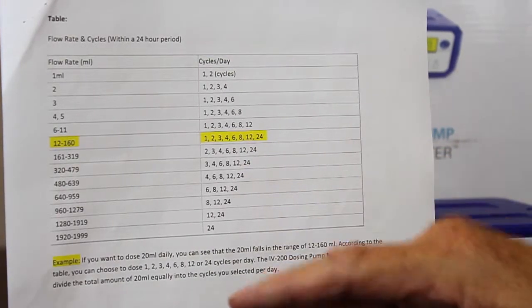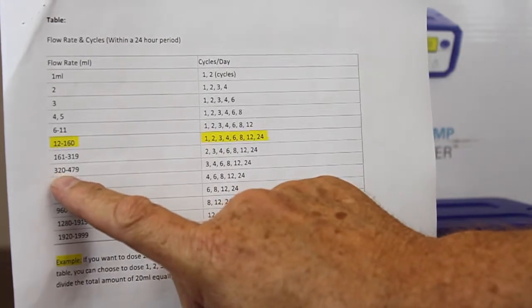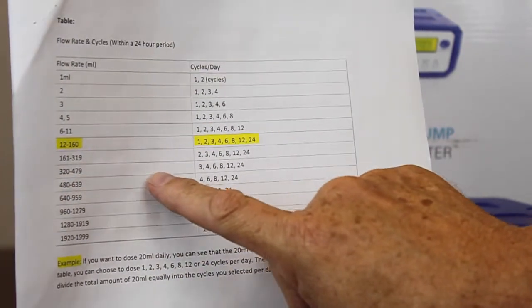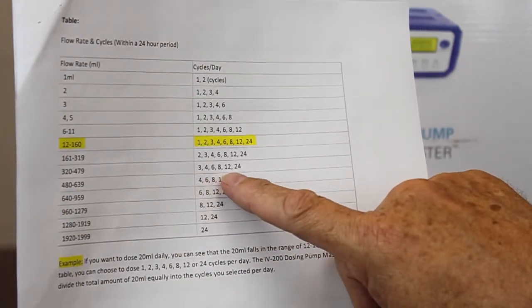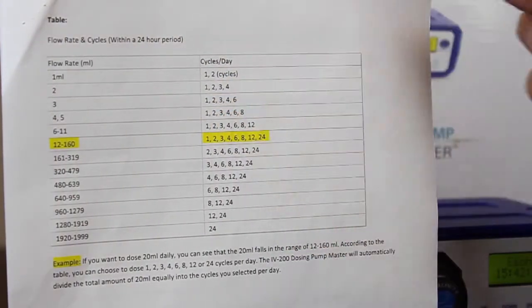Okay, so for your convenience, if you want to dose 400, 400 runs in the range of 320 to 479, and you can go 3, 4, 6, 8, 12, and 24. It's too much to dose one time a day—you don't want to put that much stuff in there.